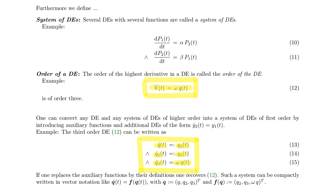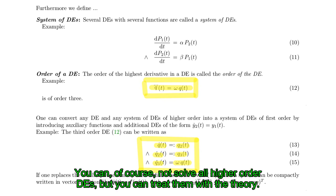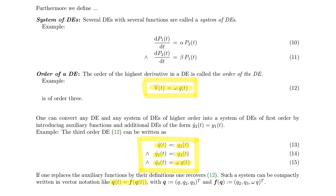These two systems are completely equivalent. This is interesting because once you have a theory for systems of first order differential equations you can solve any higher order differential equation with that theory. For such systems it is convenient to write them in vector notation, where q is the vector of functions q, q2, q3, and f of q represents the right-hand side entries, which in this case would be q2, q3, and omega times q.